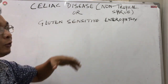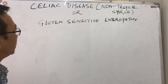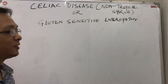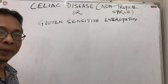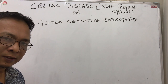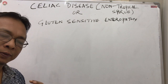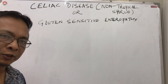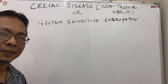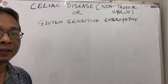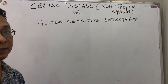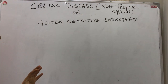Celiac disease, also called non-tropical sprue or gluten-sensitive enteropathy, is an important disease. Few decades back there were not many cases, but recently there has been an increased number of celiac disease cases.